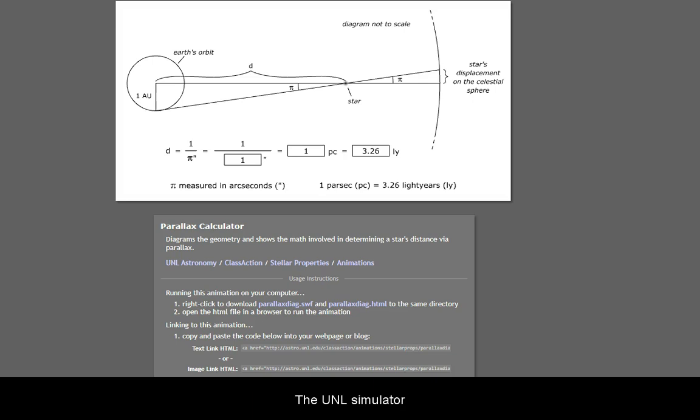The UNL simulator measures the angle pi in arc seconds. One arc second is one three-thousand six-hundredths of a degree of arc.